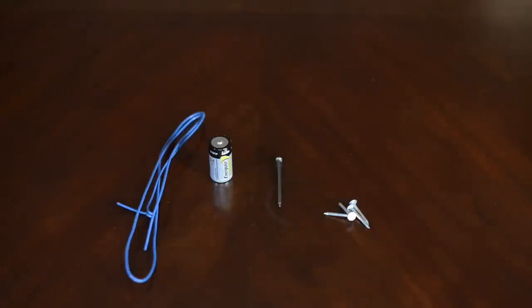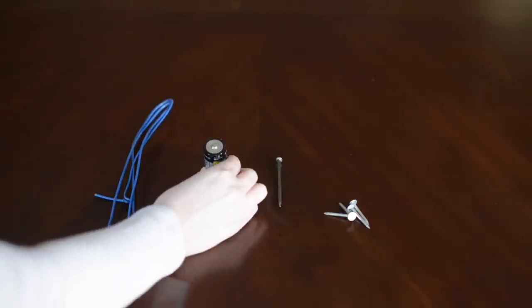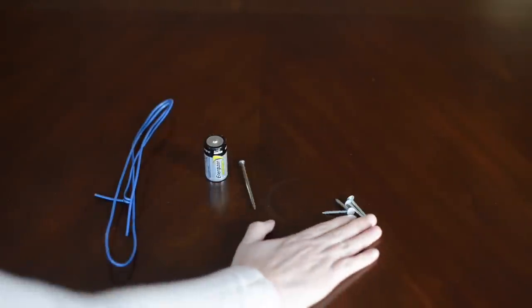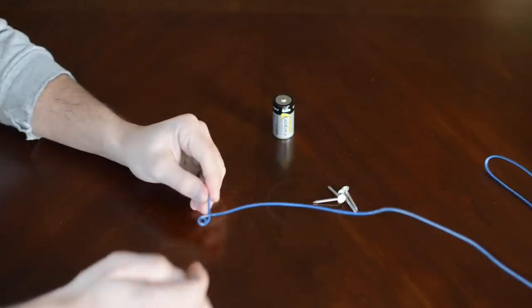What you need for this is insulated copper wire, a D-cell battery, a nail, and then something that you can pick up with your magnet. Paper clips might work better than these nails, but that's what we had.